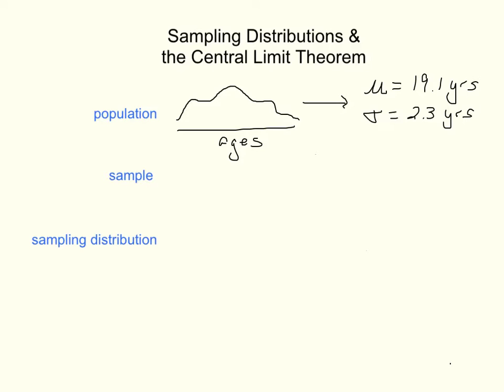Now, typically in statistics, what we do is we take samples from populations. So we may grab, say, five people from this population, which makes our sample size 5, and we would collect these five people, and then we would calculate for these five people a sample mean,